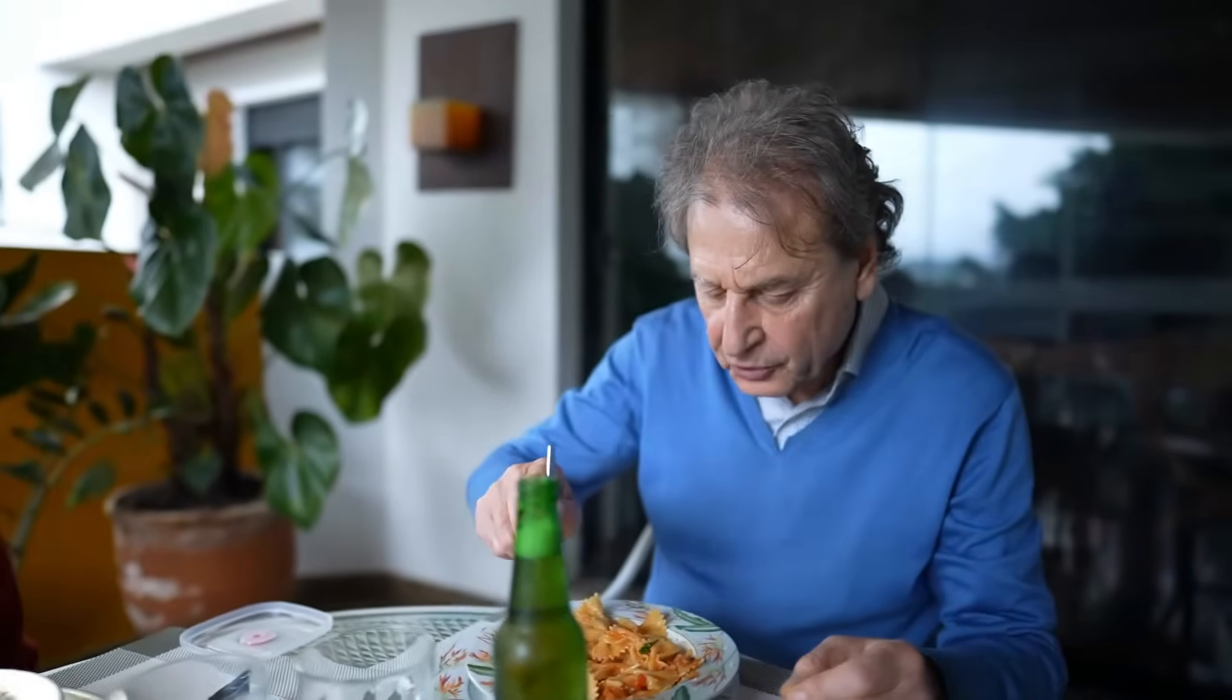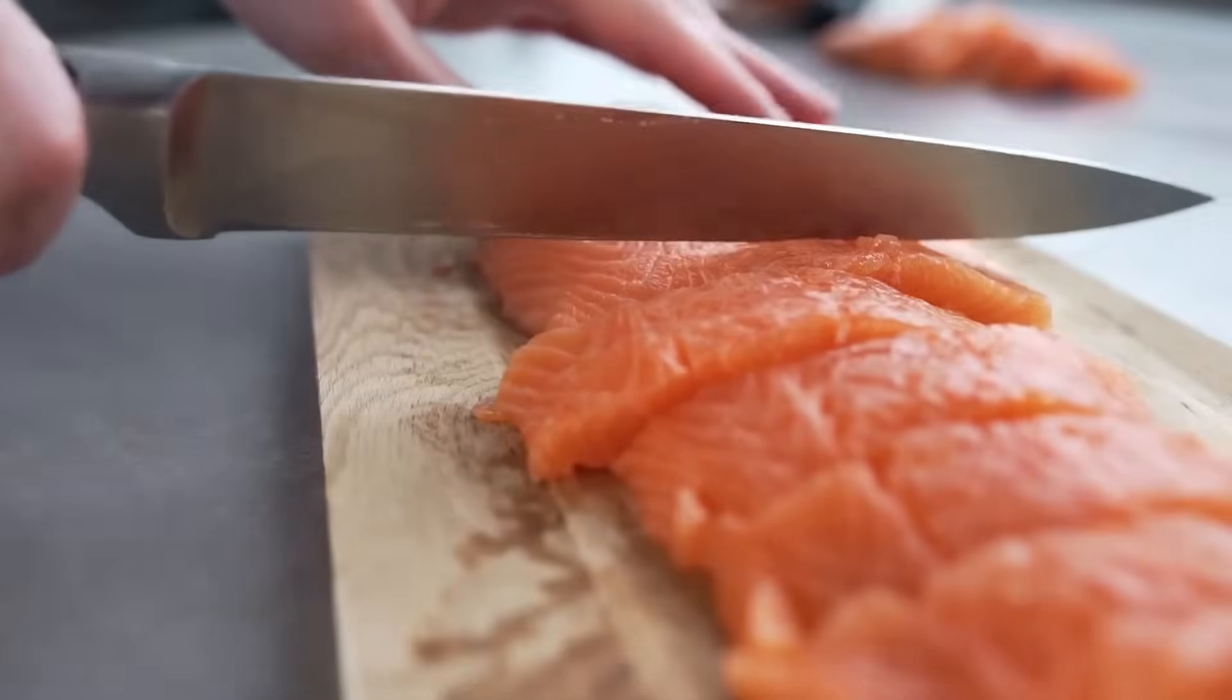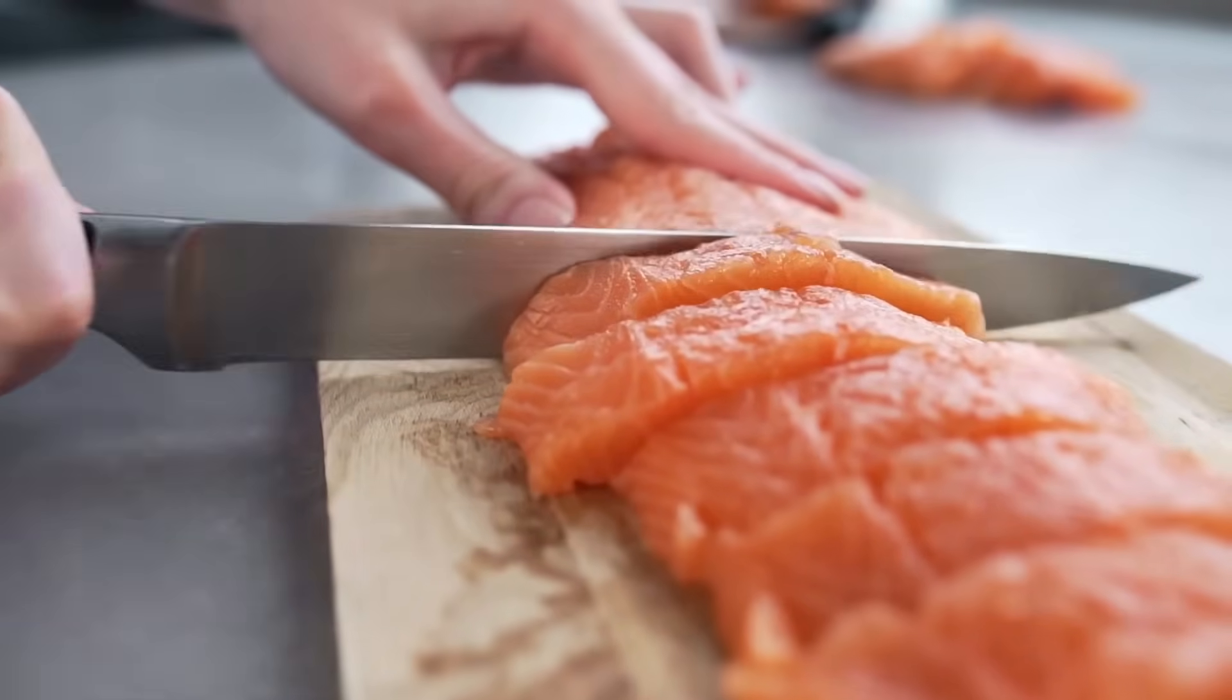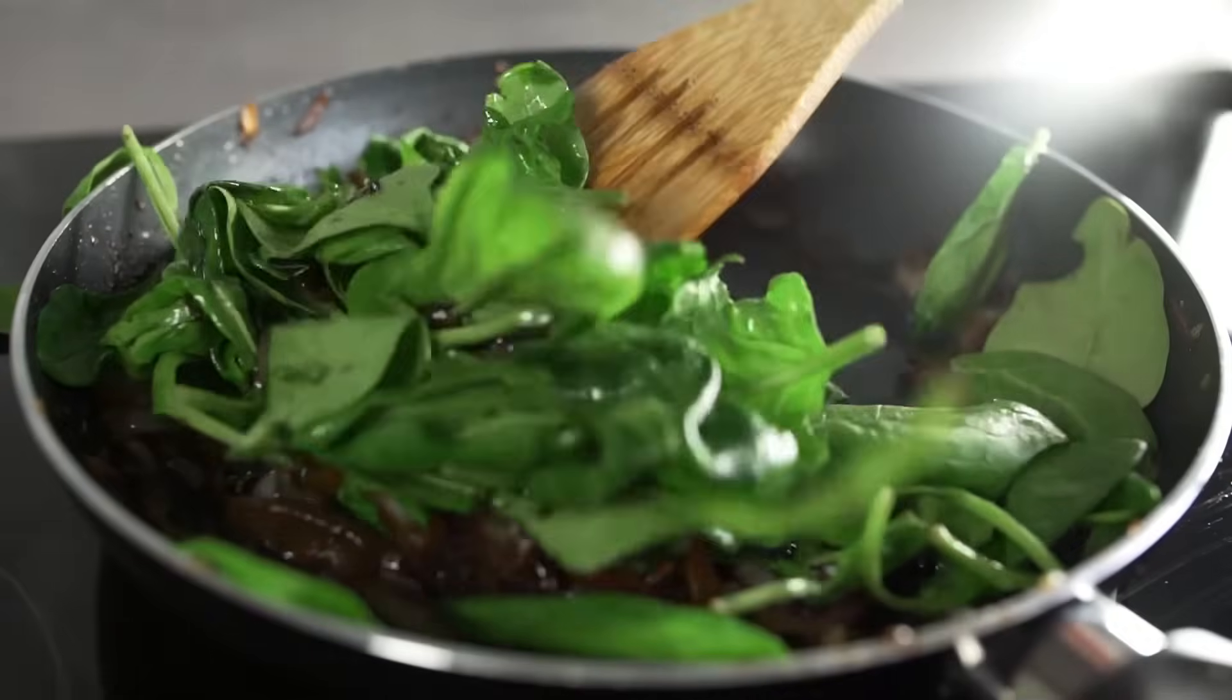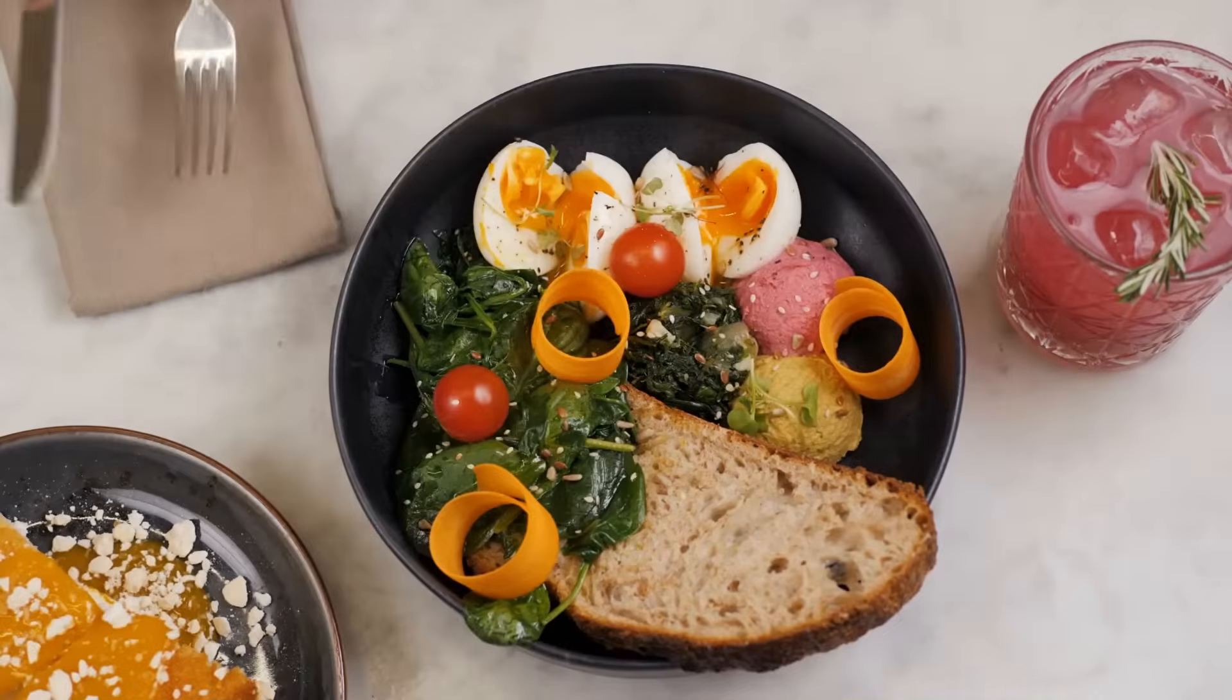For those over 50, this is even more critical. Nutrient absorption declines with age, which means supplementation or more intentional eating becomes necessary. Focus on foods like wild-caught salmon, spinach, blueberries, pumpkin seeds, walnuts, and high-quality protein sources.